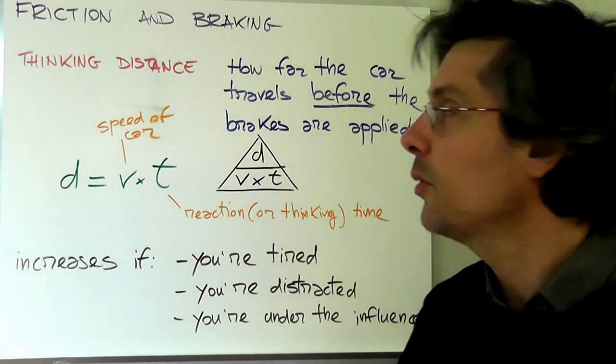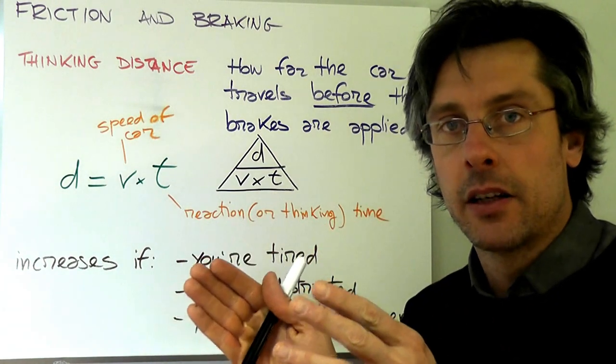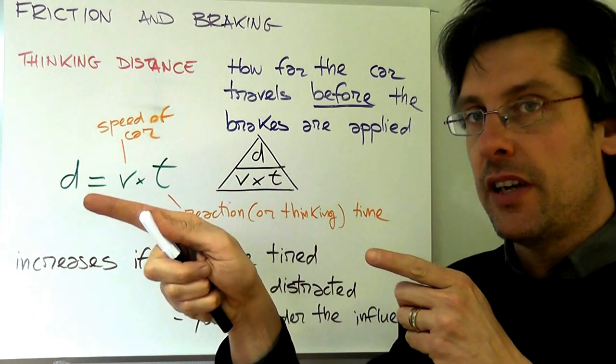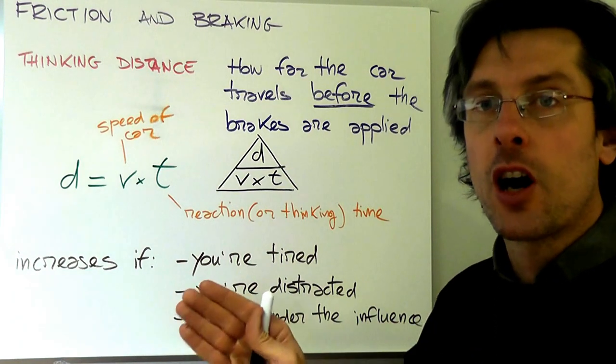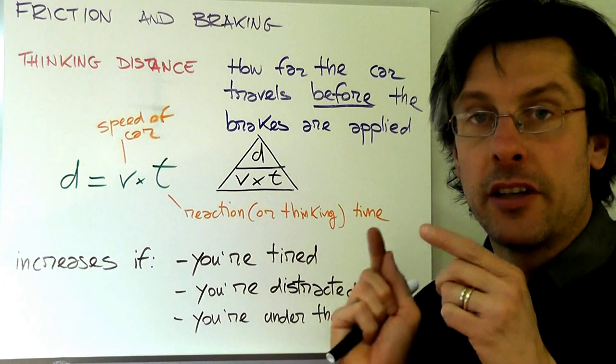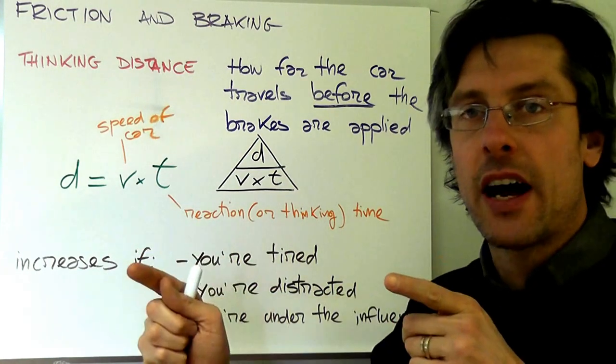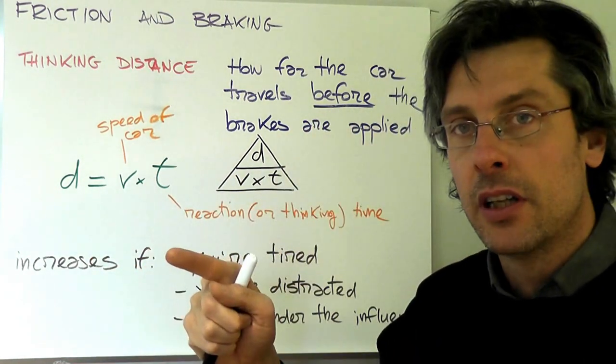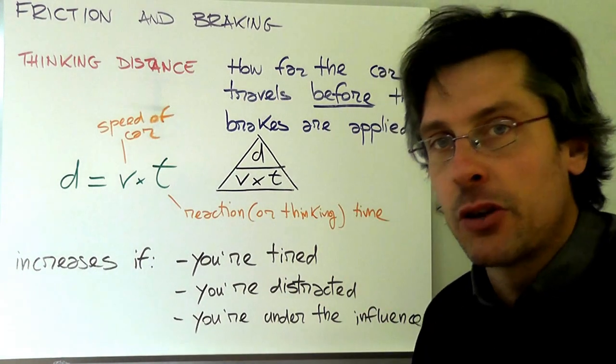The first factor you have to take into account is what we call thinking distance. As soon as you see the cat, you start thinking 'okay I need to stop,' but there is an amount of time between when you actually see the object and you start doing something, namely pressing the brake pedal, during which your car is still going at exactly the same speed. That amount of time is called reaction or thinking time, and the distance that is covered by your car as it travels at the same speed while your mind and body are reacting to that visual input is called thinking distance. So that is how far the car travels before you actually start braking.